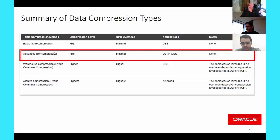It depends on whether you're using advanced compression or basic compression. With basic compression, once you load your table and get the initial rows compressed, further DMLs will slowly expand the rows and you may lose compression ratio over time. To get back to your compression ratio, you'd have to reorganize the table by doing an ALTER TABLE MOVE. But this problem doesn't exist with advanced row compression—it's completely automatic, requires no management, and recompresses data as DMLs come in.